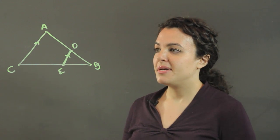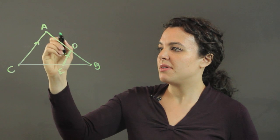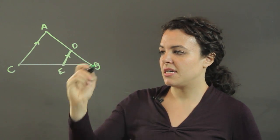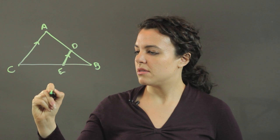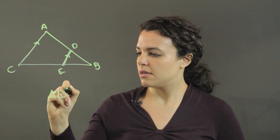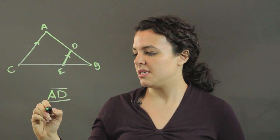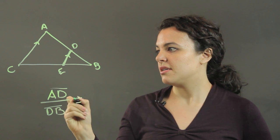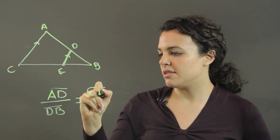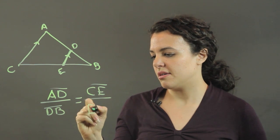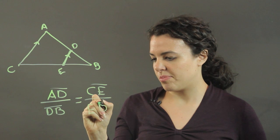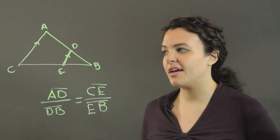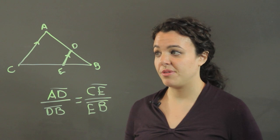So what that means is segment AD is to segment DB as segment CE is to segment EB. That is the proportion that we get out of our side-splitter theorem.